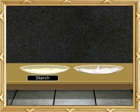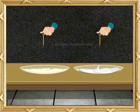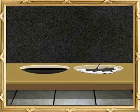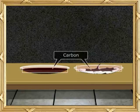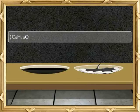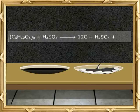Take a pinch of starch and a small piece of cotton cloth in two separate china dishes. Add 1 ml of concentrated sulfuric acid to both the dishes and observe what happens. The substance becomes black — the black mass is carbon. C5H10O5N plus H2SO4 will give you 12C plus H2SO4 plus 5H2O. Removal of hydrogen and oxygen in the form of water leaves behind carbon.